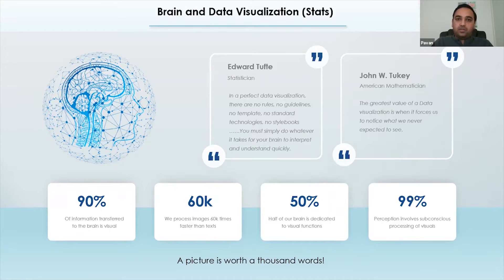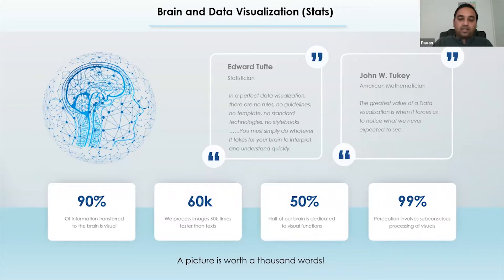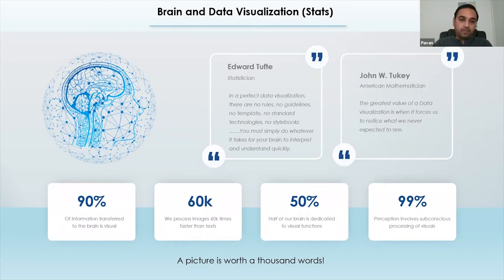All the startups and new companies and even existing vendors basically look for data science and then try to find out how data has been explored and visualized. When they show you probable charts, graphs, and dashboards that you can use, every time they go back and relate it to the brain — how your brain processes that data. So let's see some of the stats. 90% of information transferred to the brain is visual. We process images 60,000 times faster than text. Half of our brain is dedicated to visual function, and 99% involves subconscious processing of visual information.